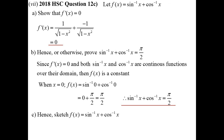Hence, sketch the curve. Remember that inverse sine and inverse cos have restrictions on the domain — they're only defined between minus 1 and 1. So the straight horizontal line only goes between minus 1 and 1.